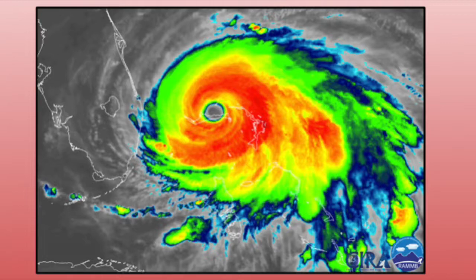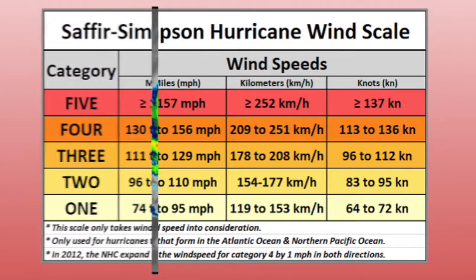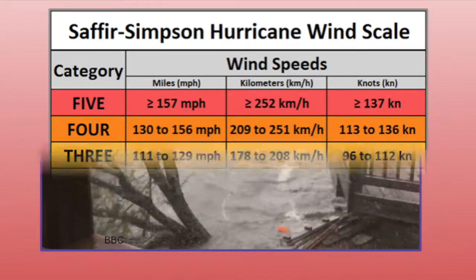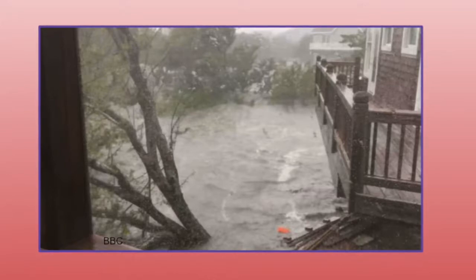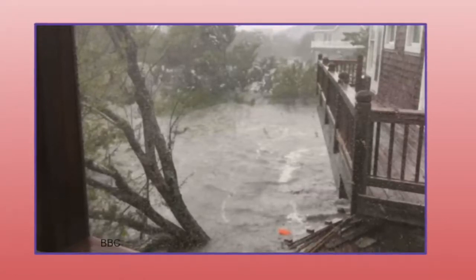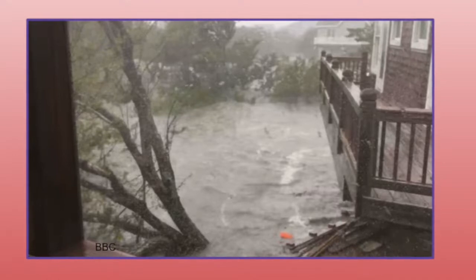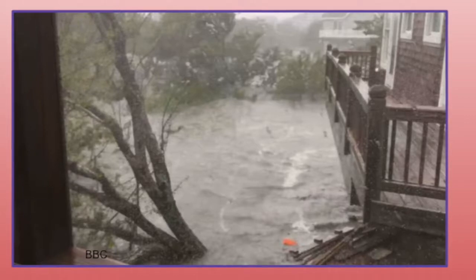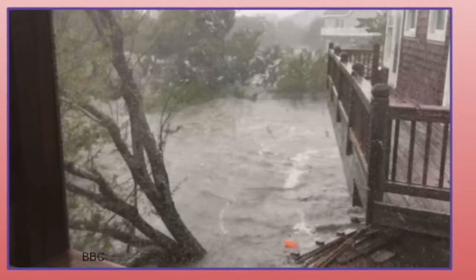Hurricanes are dangerous storms that bring high winds, heavy rainfall, and storm surges. Hurricane categories are based on wind speed. This table shows the wind speed and storm surge of each category hurricane. The storm surge is water pushed toward the shore by winds surrounding a hurricane. The incoming water can raise the ocean surface level by 15 feet or more. Waves can combine with the tide to create dangerously high water levels that cause severe flooding in coastal areas.